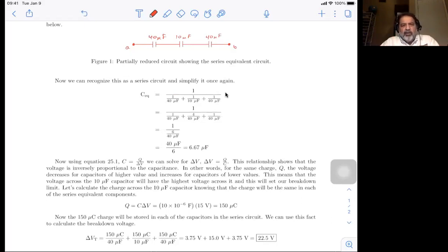So now using equation 25.1 C equals Q divided by Delta V, we can solve for Delta V and we get Delta V equals Q over C. This relationship shows that the voltage is inversely proportional to the capacitance. In other words, for the same charge Q, the voltage decreases for capacitors of higher value and increases for capacitors of lower values. This means that the voltage across the 10 microfarad capacitor will have the highest voltage across it. And this will set our breakdown limit.